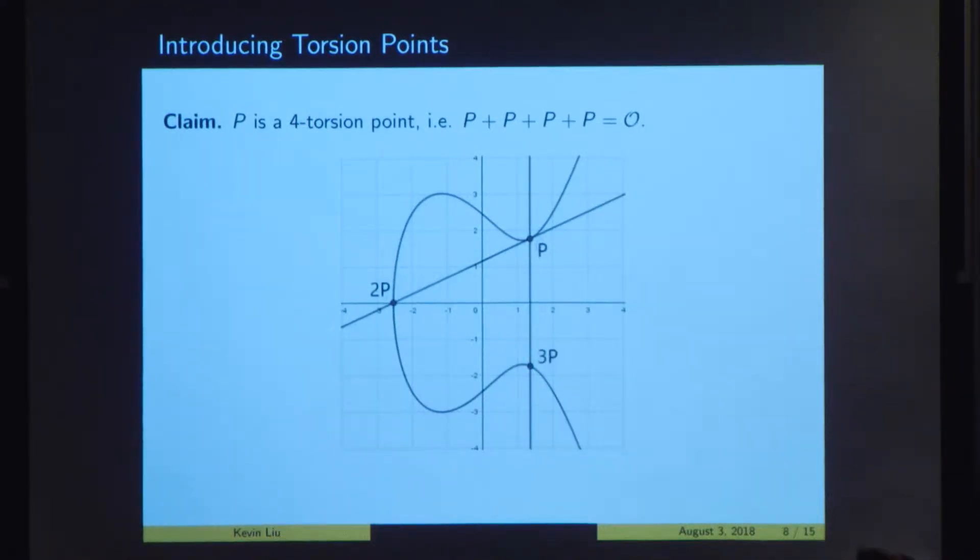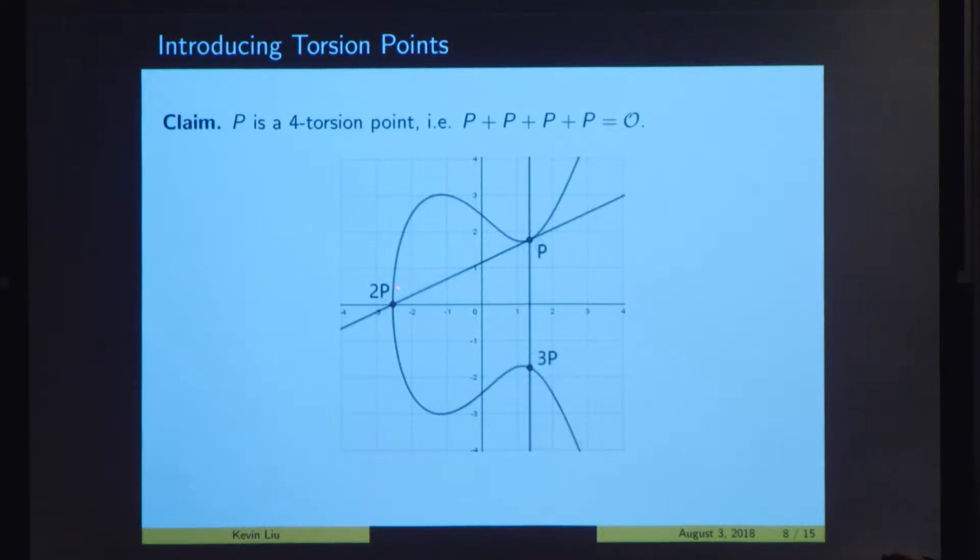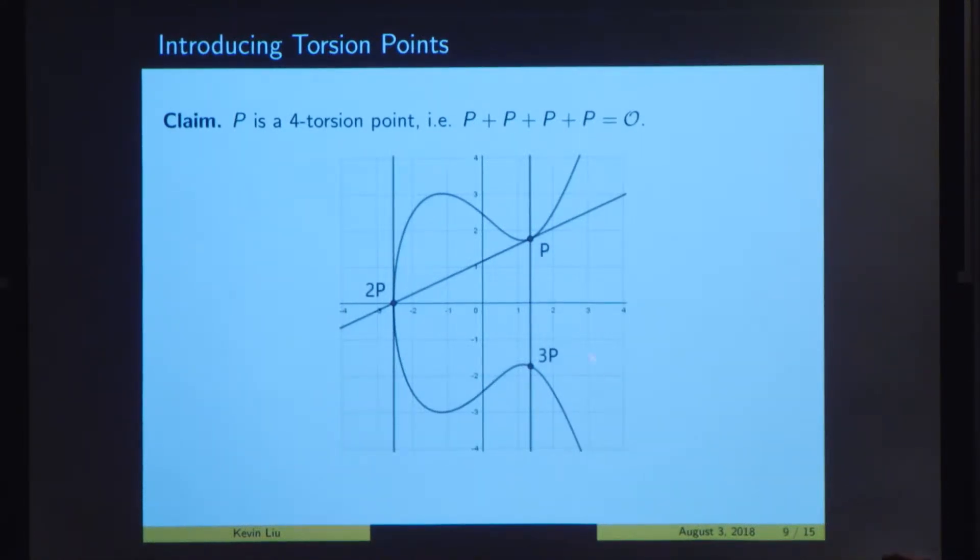So now we want to find 3p. So we draw the line through p and 2p. Again, the tangent line can be thought of intersecting the curve twice at p. So the third intersection is just p again. We reflect it over and we get this point 3p. And now we find p plus 3p. So we draw the line through them and it's vertical. So that means a third point of intersection of this line with the curve is our point at infinity o. And so p plus 3p or 4p is our point at infinity o. And just as another demonstration to show the associativity of this addition operation, we can also show that 4p is identity by adding 2p to itself. So we draw the tangent line at 2p and it's vertical. So it'll pass through the point at infinity o. And again, we get that 4p equals o.